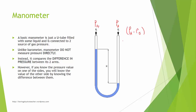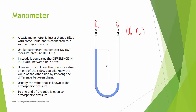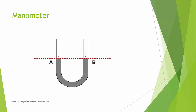But if you know the pressure value of one side, you will know the value of the other side by knowing the difference. Usually the value that is known is the atmospheric pressure, so you expose one end to the open air. Let's do a comparison.